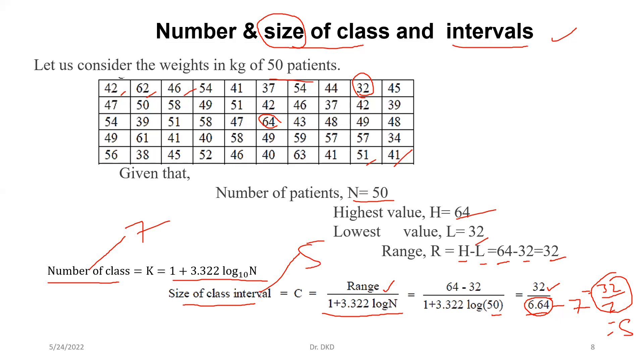So now if number of class interval is found out and size of the class interval is already found out, with help of that we can create our data in groups with the exclusive class interval, inclusive class interval, or open-ended class interval. This is basic information about number of class intervals and size of class intervals.